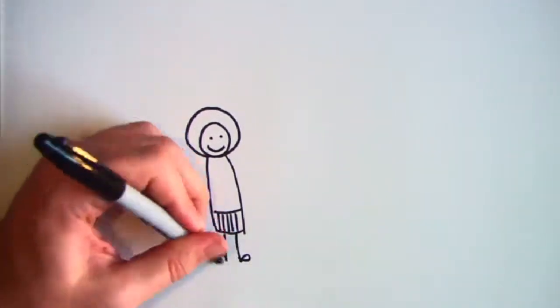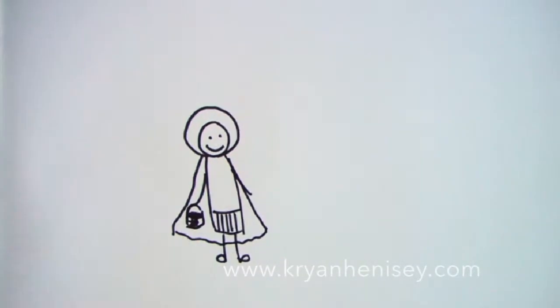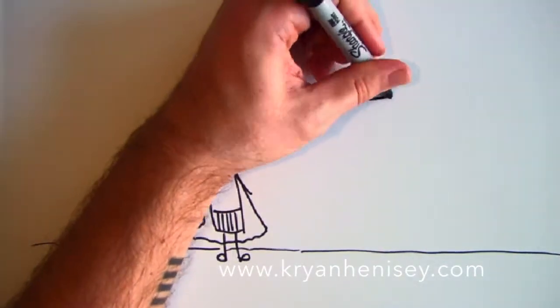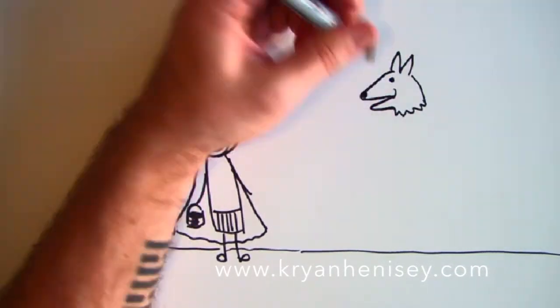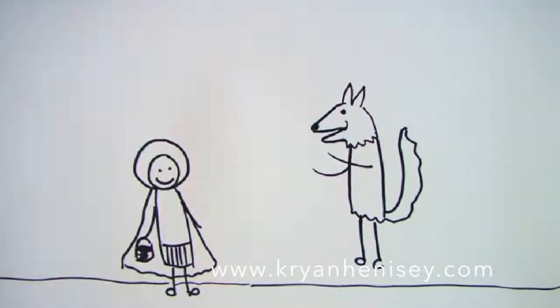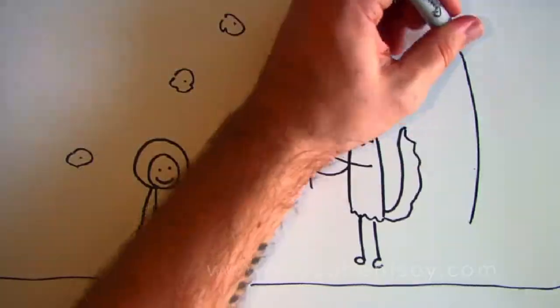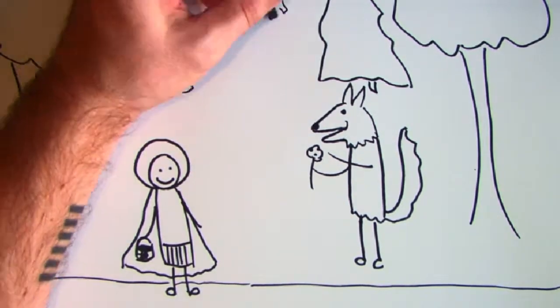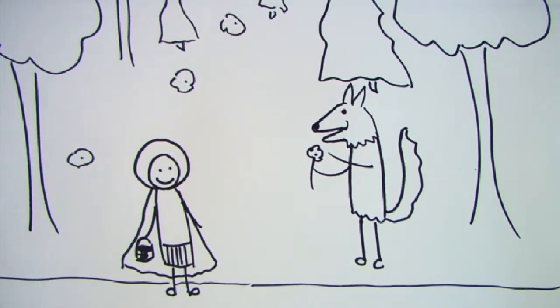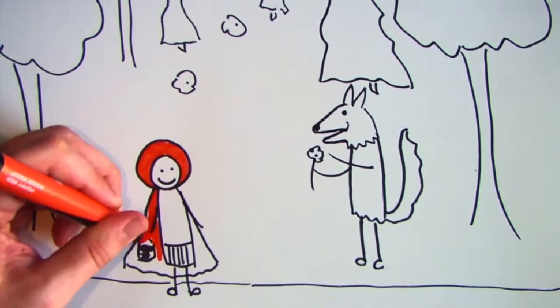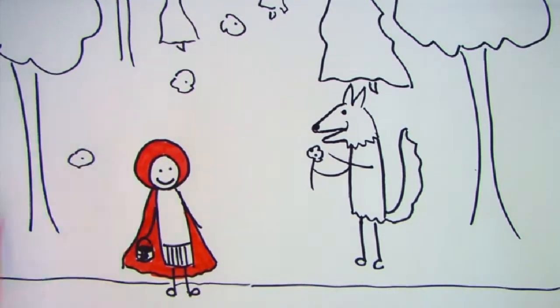Where are you off to? asked the wolf, and Red Riding Hood told him. She was off to see Grandmother. Well, he said, you should wander off the path and pick a few flowers for her. Grandmothers love when little girls give them flowers. And Riding Hood thought it was a great idea.